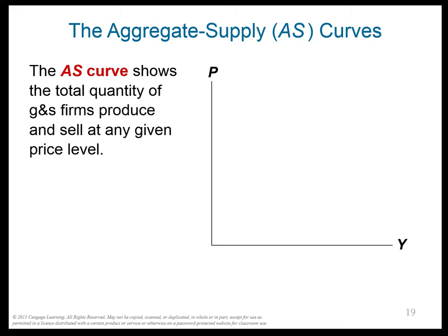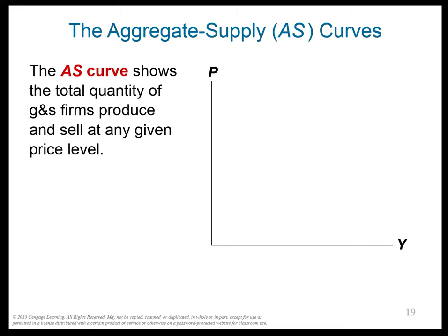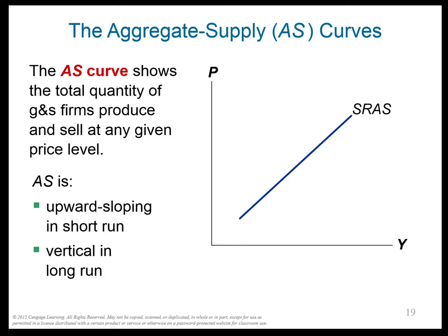Now let's talk about aggregate supply — the firms that are producing. We're going to transition from aggregate demand, which is consumers, to firms, which is aggregate supply. Here's the confusing part: in the short run, the aggregate supply curve slopes upward, but in the long run, it's vertical — straight up and down. So there are actually two aggregate supply curves.